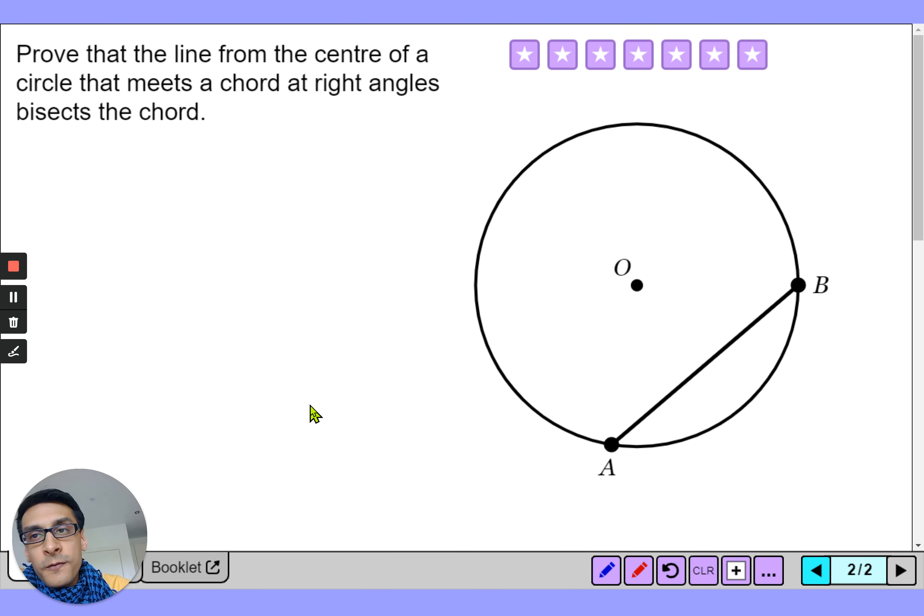Let's do the proof for this. Prove that the line from the center of a circle that meets a chord at a right angle bisects the chord. So you have a chord and we've decided it's going to meet at a right angle here. How can we prove that those lengths are the same, AC and CB?